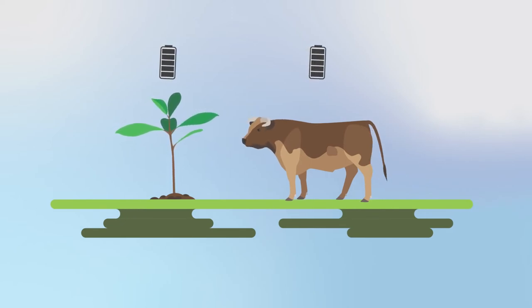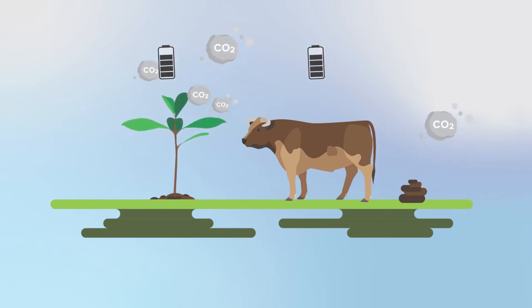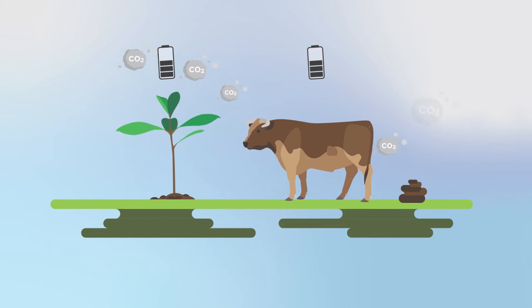Animals and plants also produce carbon dioxide through a process called respiration. This releases carbon from the biosphere into the atmosphere.